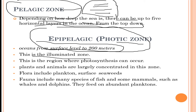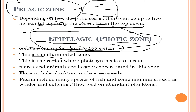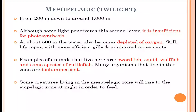Flora in the epipelagic zone includes plankton and surface seaweeds, while fauna includes many species of fish and mammals such as whales and dolphins, which feed on abundant plankton. This is the uppermost layer of the ocean.